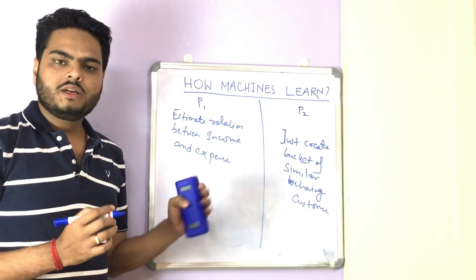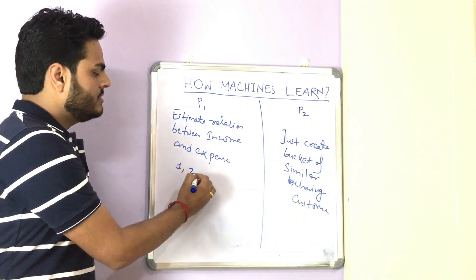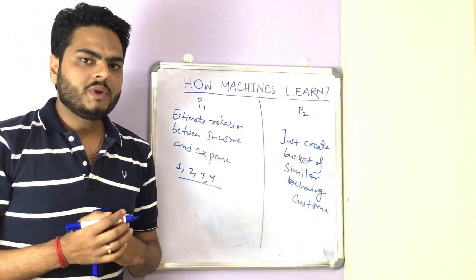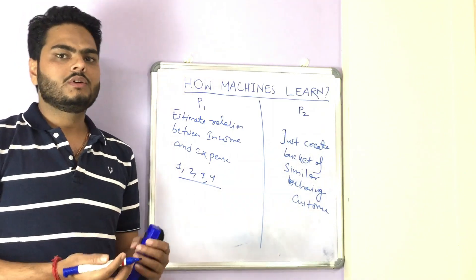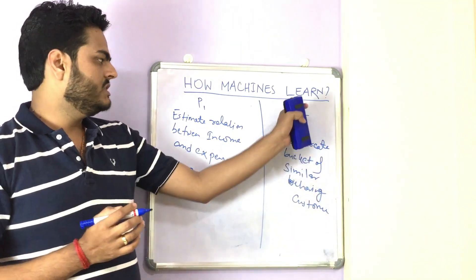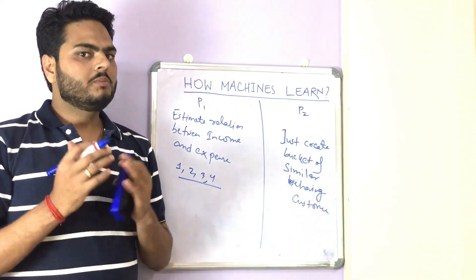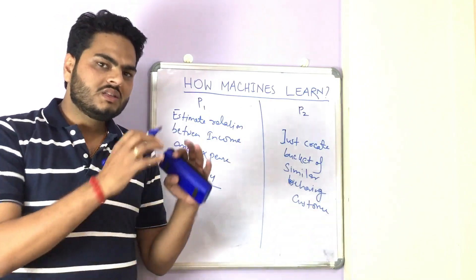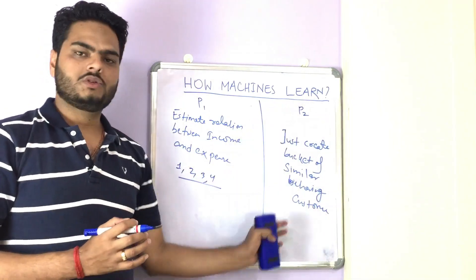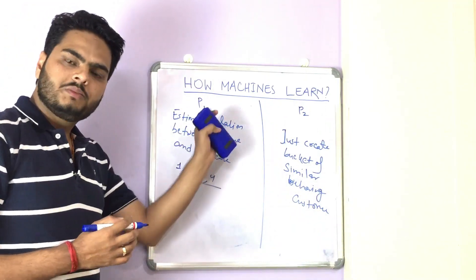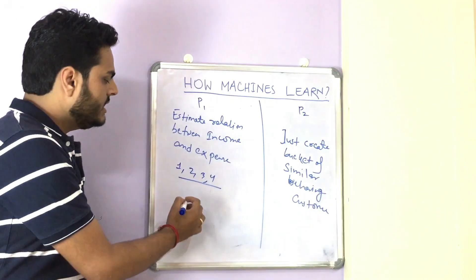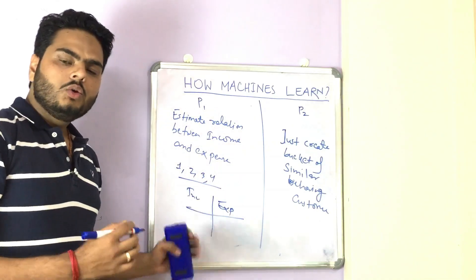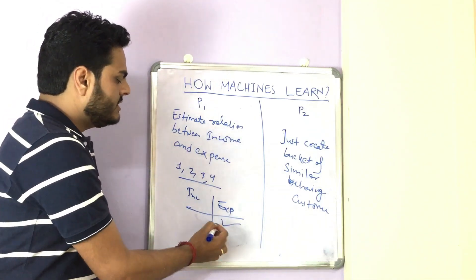For problem statement one, let's say this is me and three of my friends. The problem statement is to find a pattern in income and expense of me and my friends. For problem statement two, we need to bucket similar customers from a superstore into different groups. For problem statement one, we need data of income and expense, and we want to understand how expense is related to income.